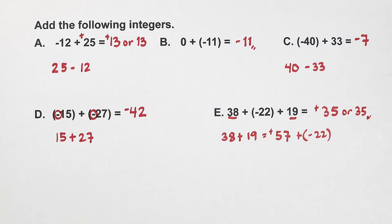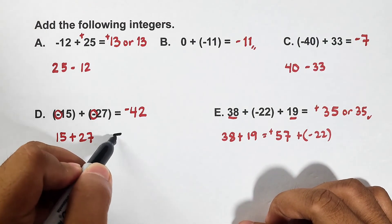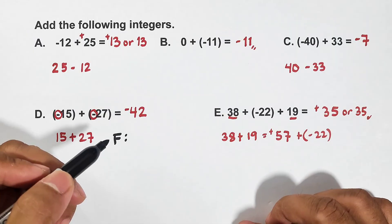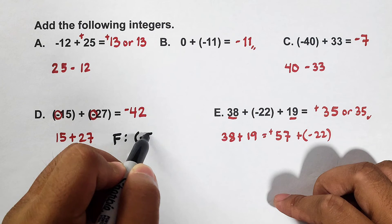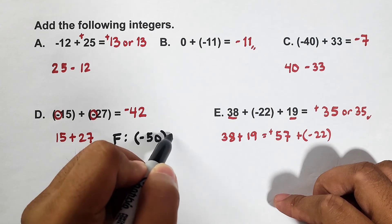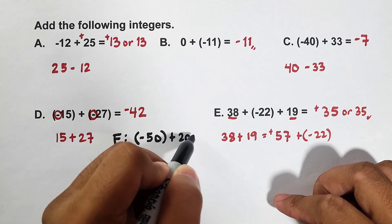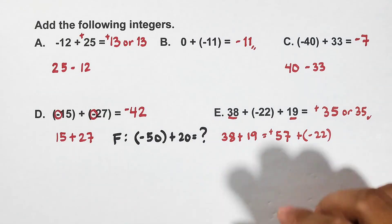So there you go guys, I hope you understood our lesson about the rules and our examples. And as part of our routine, I will give you example letter F. And I hope you can answer this in our comment section. I will give you negative 50 plus 20. Please comment down below what is your answer in this kind of problem.